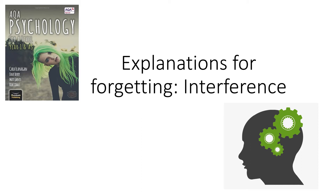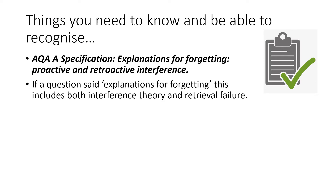Hello everyone, so today we're looking at the explanations for forgetting, specifically interference, following along with the AQA psychology textbook for A Level Year 1 and AS. The things you need to know: your specification point is explanations for forgetting, proactive and retroactive interference. If a question says 'explanations for forgetting' and doesn't specifically say interference theory or retrieval failure, it wants you to talk about both of these explanations.